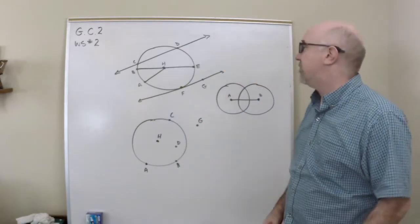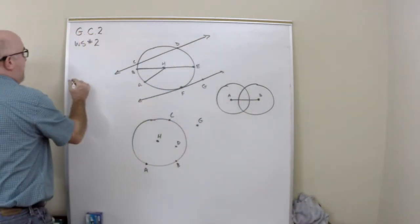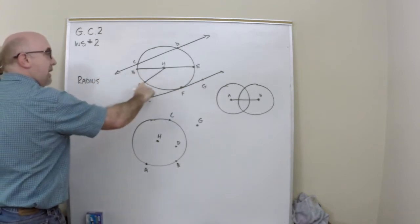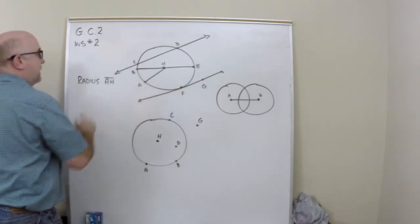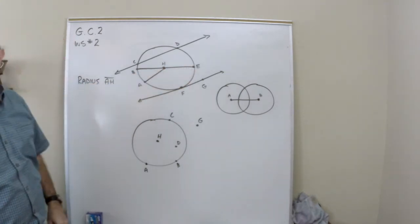So let me kind of go through those. I think that you would know a radius, and as I'm writing it, I'm sure you're looking over here, like AH is a radius. There would be another radius, BH, EH, those are radii.